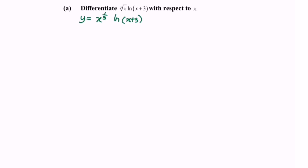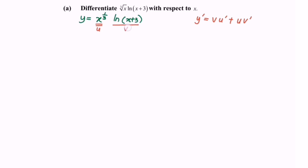Kindly state the formula for the product rule, where y prime is equal to v multiplied with u prime, plus u multiplied with v prime. So we can denote the two terms as u and v.